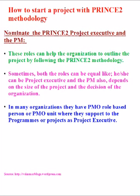They should have skills in PRINCE2 methodology. The executive might have worked in a program management office or project management office where PRINCE2 methodologies were followed. Sometimes both roles can be combined — one person can be both project executive and PM — depending on the size of the project and the decision of the organization. For example, if you have 10 or 20 people on the project, the organization can have the PM take care of the project executive role also to save cost, with PMO activities enforced to the project manager.